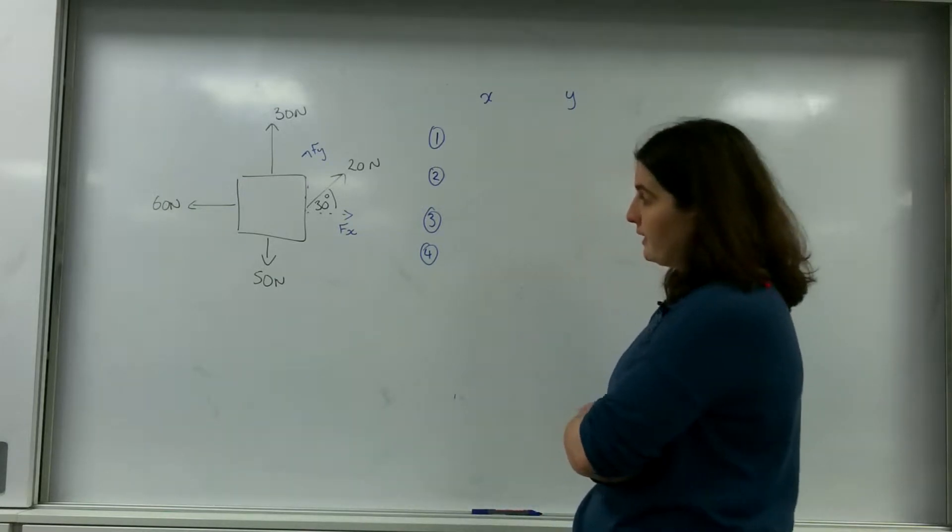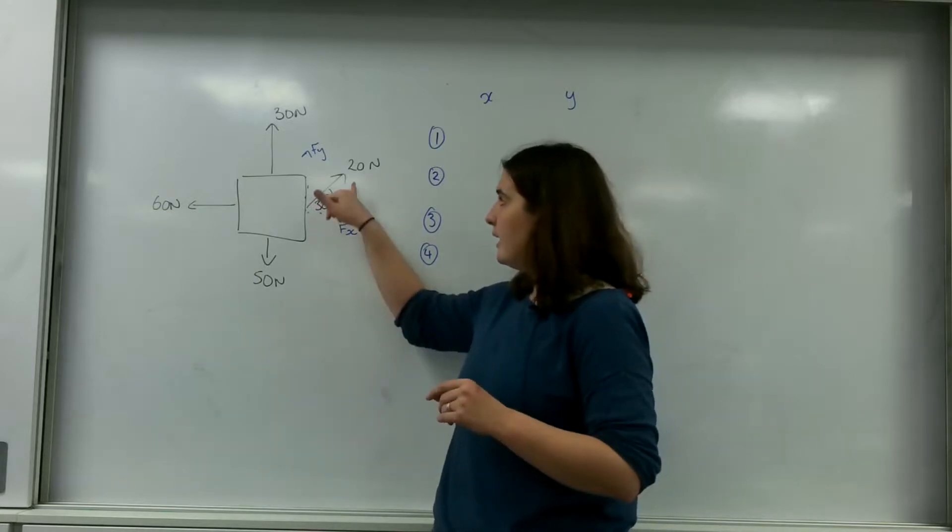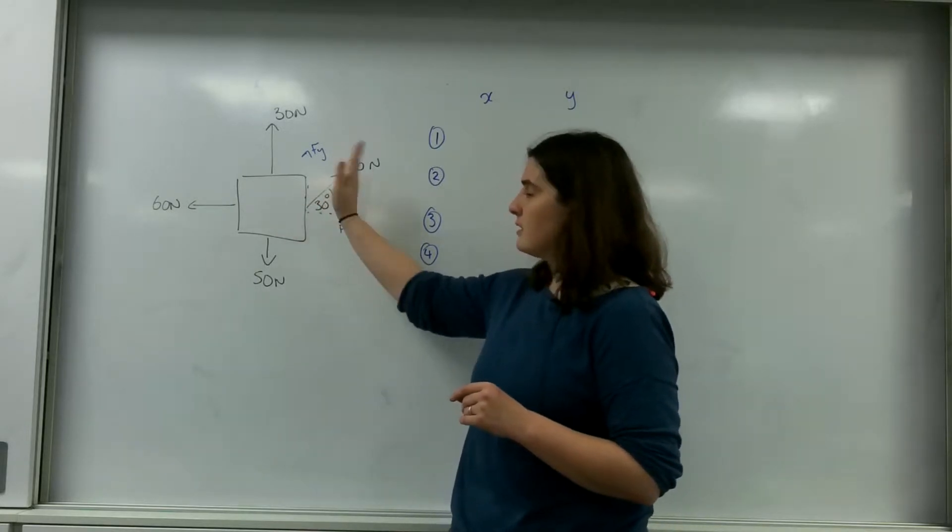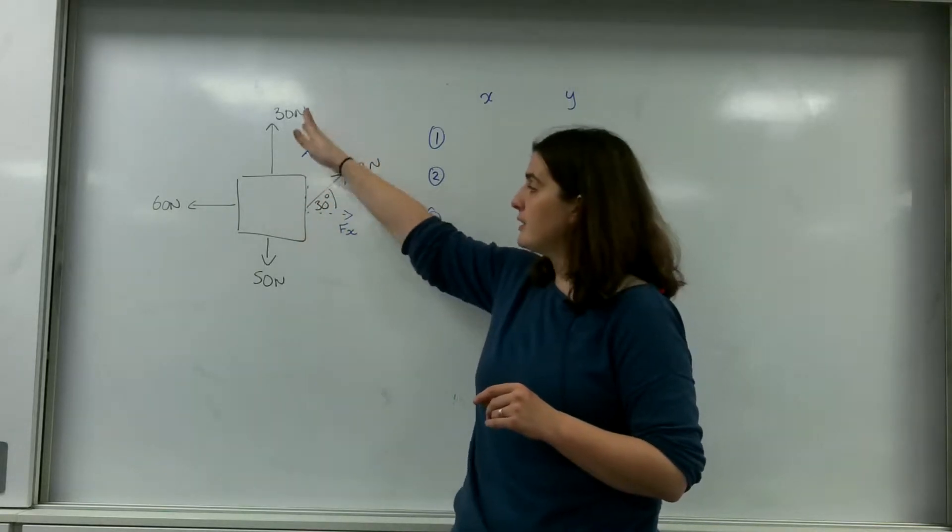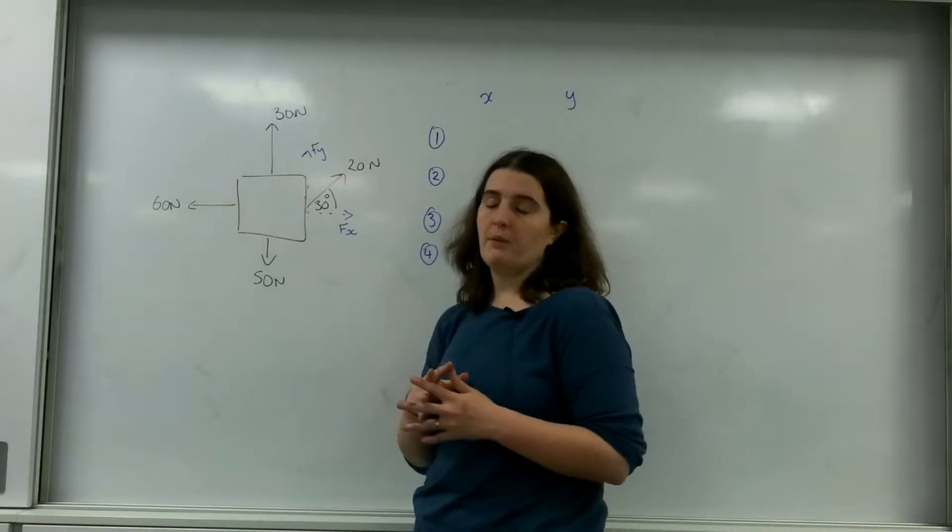So I have a box here with forces acting: 20 newtons acting at 30 degrees, one at 30, one at 50 going down, and one at 60 going this way.